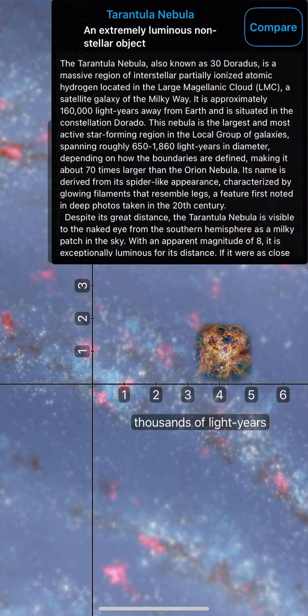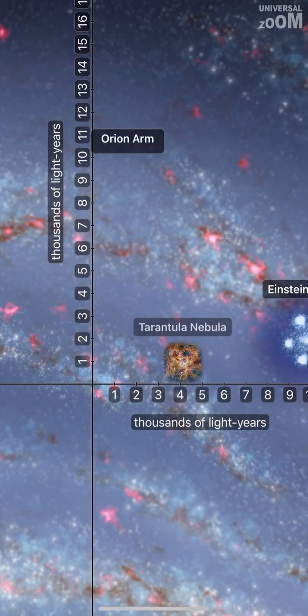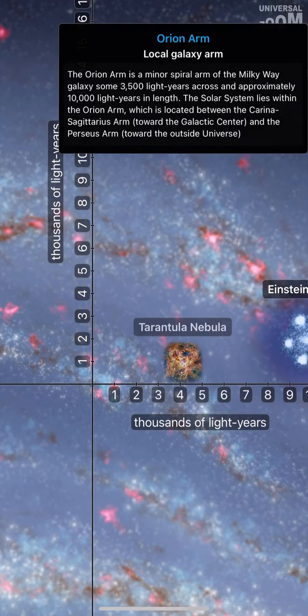Tarantula Nebula, an extremely luminous nonstellar object. Einstein Cross, a gravitationally lensed quasar. Orion Arm, local galaxy arm.